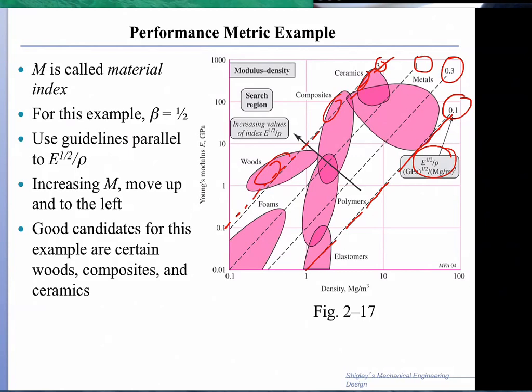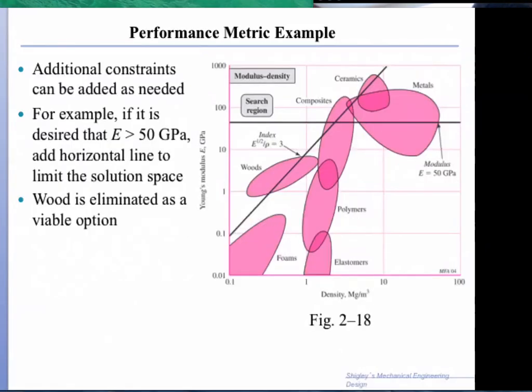Now we can choose wood, we can choose composite, we can choose ceramic, and from within we can be much more specific as the design progresses. However, we can put in also constraints.